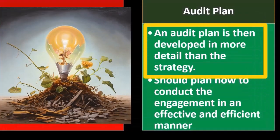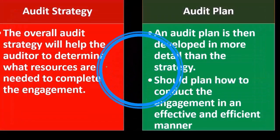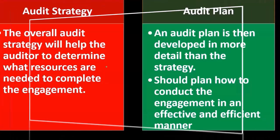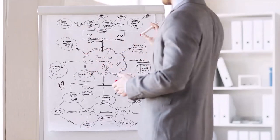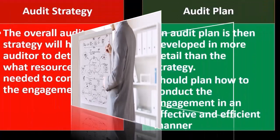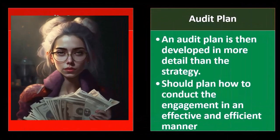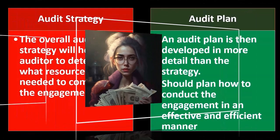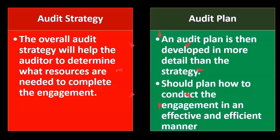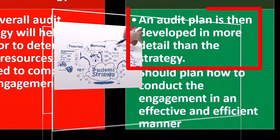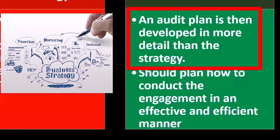An audit plan is developed in more detail than the strategy. First, we think about the overarching strategy — framing things at a high level — and then we put together the plan, which is more concrete, closer to a blueprint that we can follow in a step-by-step, mapped-out process, as opposed to the strategy, which doesn't quite list out exactly what's going to be happening.